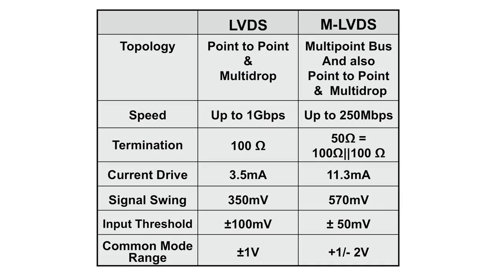MLVDS is multi-point LVDS. This is a version of LVDS that can be used for multi-point bus systems where there are more than one receiver and more than one driver. Whereas LVDS can reach speeds of one gigabit per second, MLVDS devices can function up to 250 megabits per second. MLVDS offers more robustness than LVDS in terms of current drive, input voltage common mode range, and a lower input voltage threshold.